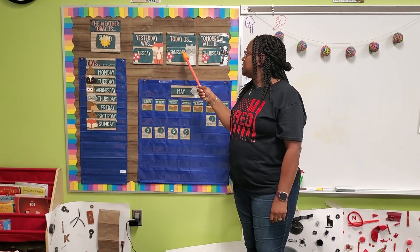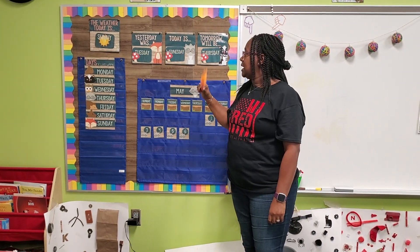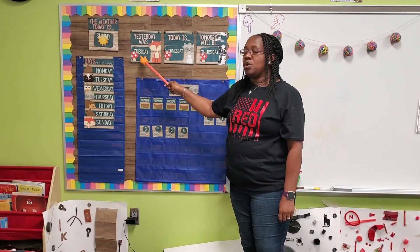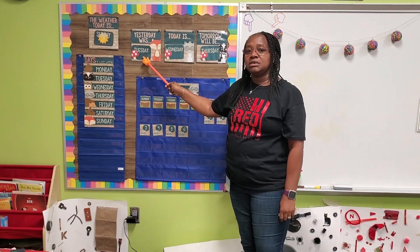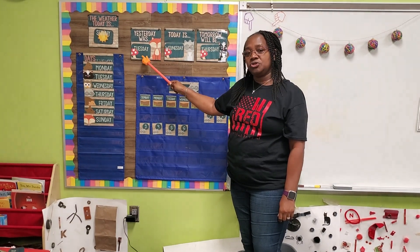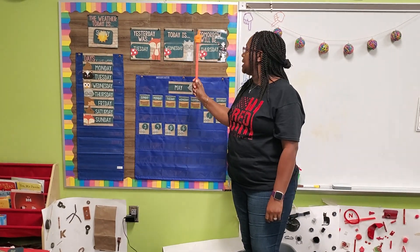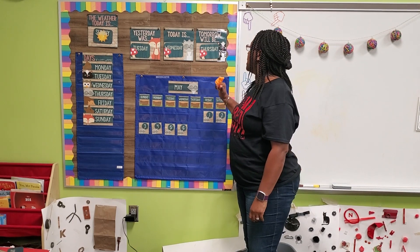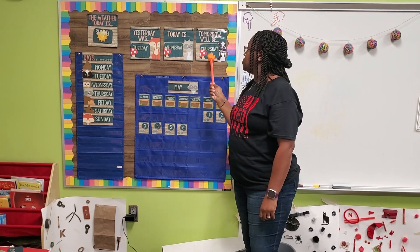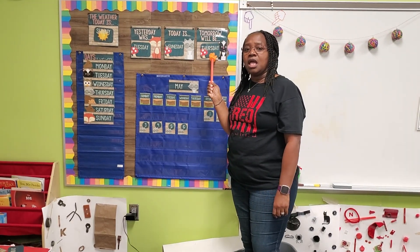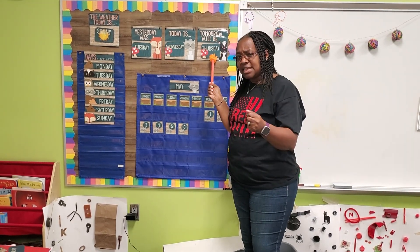So today is Wednesday, then yesterday was Tuesday. Good job. So if yesterday was Tuesday and today is Wednesday, then tomorrow will be Thursday.